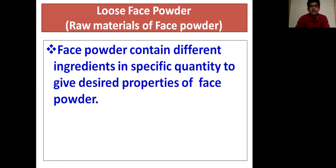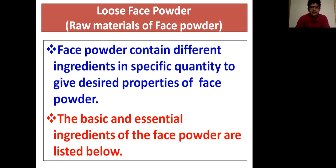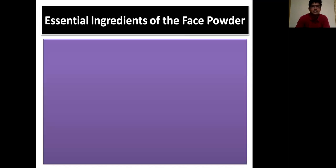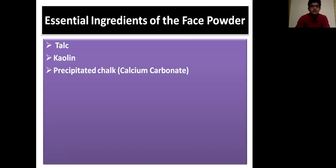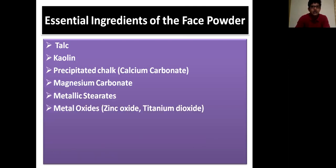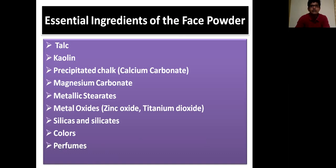Face powder contains different ingredients in specific quantities to give desired properties. The essential ingredients of face powder include: talc, kaolin, precipitated chalk (also known as calcium carbonate), magnesium carbonate, metallic stearates, metal oxides like zinc oxide and titanium dioxide, silica and silicates, colors, and perfumes.